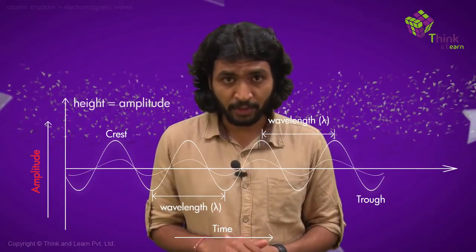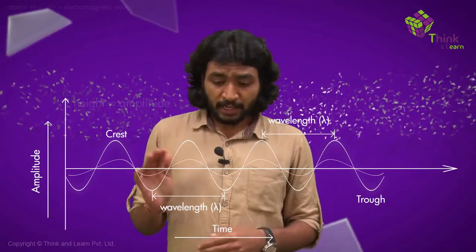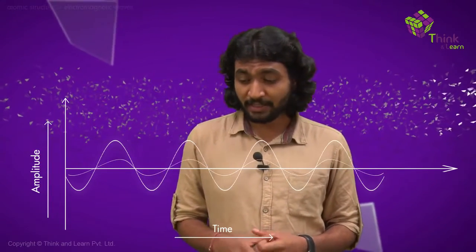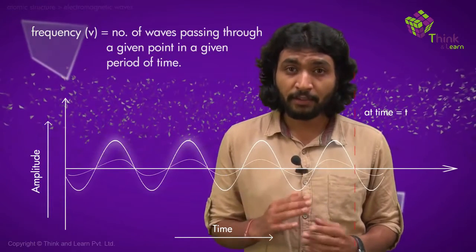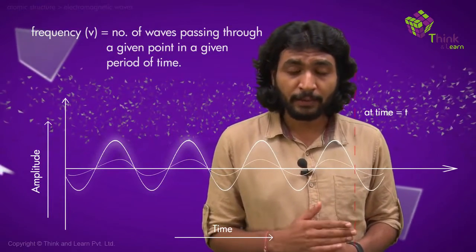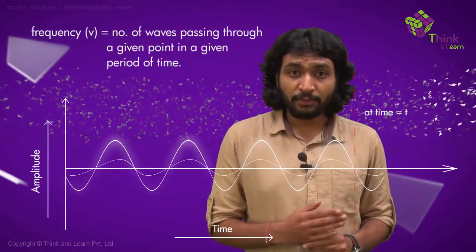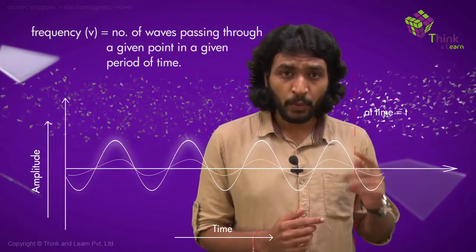Next thing is you have the height of the wave, which we call the amplitude of the wave. And the wave has a frequency. What is the frequency? The frequency is the number of waves or the number of crests that pass through a given point in a given period of time. This is called frequency, denoted as nu. The unit of frequency is seconds power minus one.